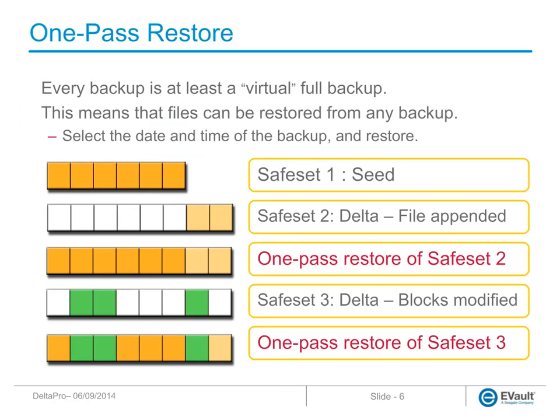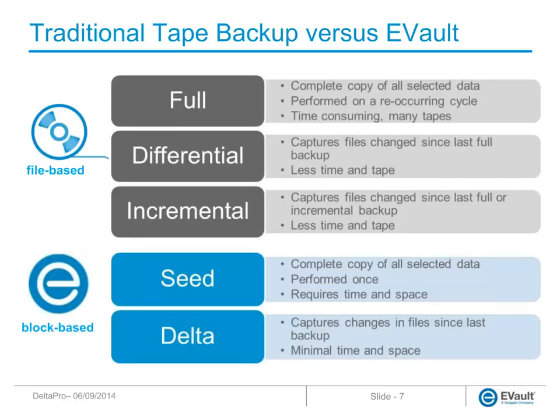eVault OnePass Restore dynamically combines collections of delta backups with the necessary portions of the seed backup to allow you to restore your data as it was at a specific point in time. Unlike tape backup, there is no need to perform multiple restores from multiple backup sets. Here you can see the differences between traditional tape backup techniques and an eVault backup.